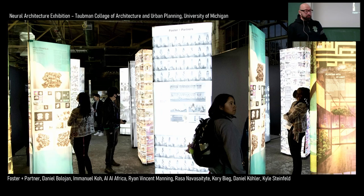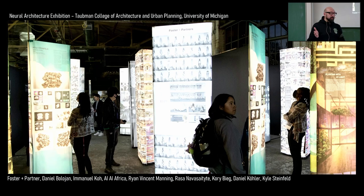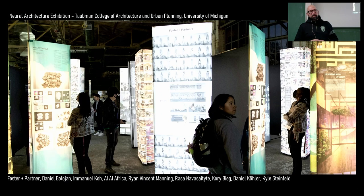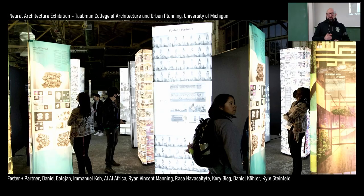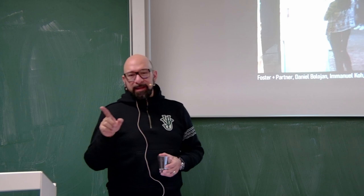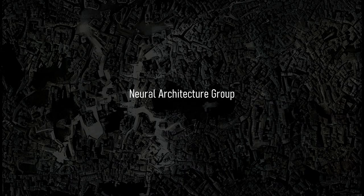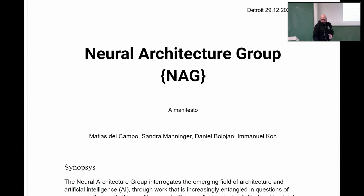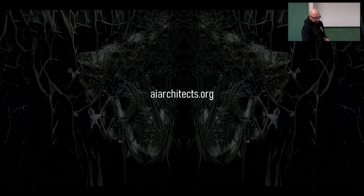The whole work on neural architecture and AI is also accompanied by a set of activities. We did the Neural Architecture Exhibition, which just ended — it opened last year in October — with people like Daniel Poloja, Emmanuel Coe, AI Africa, Ryan Vincent Manning, Rara Naisaitite, Corey Big, Daniel Koehler, and Kyle Steinfeld. The day after the opening we made a symposium at Taubman College where all these people came together and discussed the issues I showed you today. This is a far more inclusive approach to architecture because it touches on every single aspect of humanity. AI is already all around us — every time you open your phone, use an Instagram filter, get recommendations on Amazon, or apply for a bank loan. If we as architects do not engage with it, somebody else will do it for us. We created a website, AIarchitects.org, where we collect different positions and people working on it.